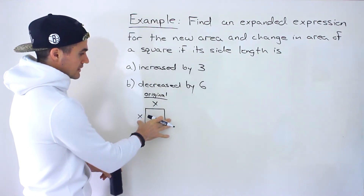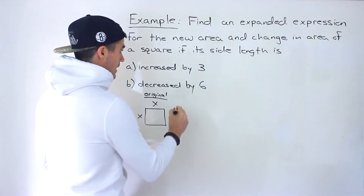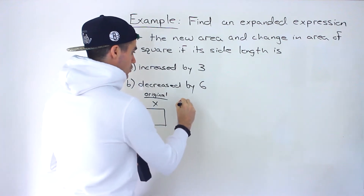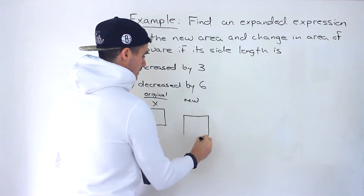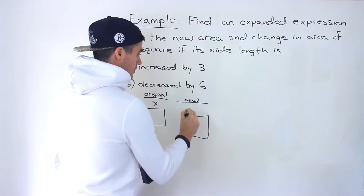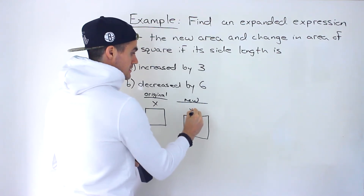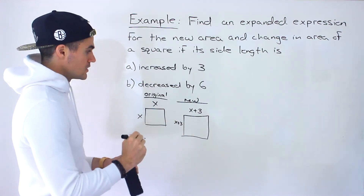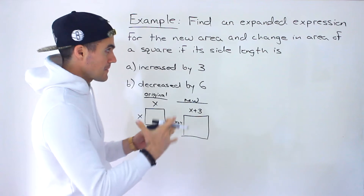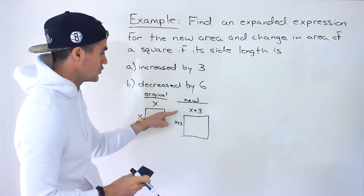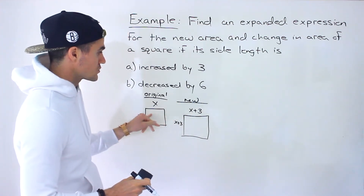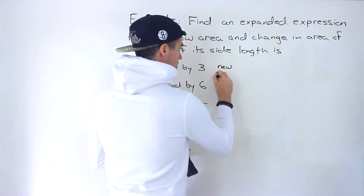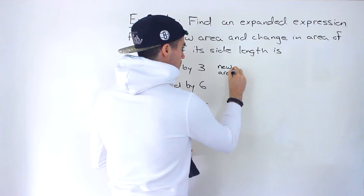In part a, we're told the side length is going to be increased by three, so the new square is going to have a side length of x plus three on all sides. We need to find the expanded expression for the new area and also the change in area. Let's write both of these at the same time since they won't be too large of expressions.